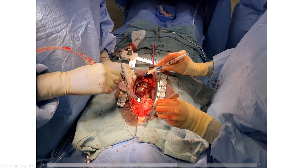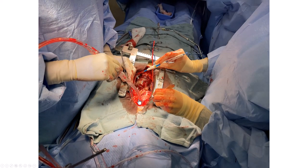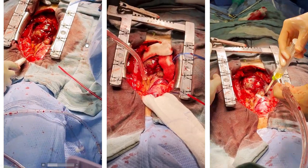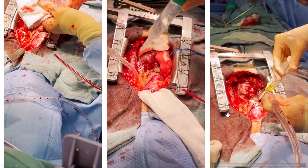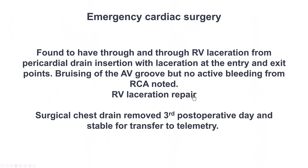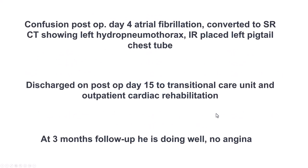At surgery, it was found that the pigtail had gone through and through the right ventricle. The perforation of the RCA with some hematoma had actually sealed at the time of surgery. So the reason for re-accumulation of the pericardial effusion was that the pigtail catheter had gone through and through the RV and was bleeding around it. The pigtail was removed, the RV was repaired with patches and some glue, and glue was also applied around the area of the RCA. The patient did well afterwards with no more bleeding. He had a long hospital course but was eventually discharged to rehabilitation, and three months later he is doing well without any injury.